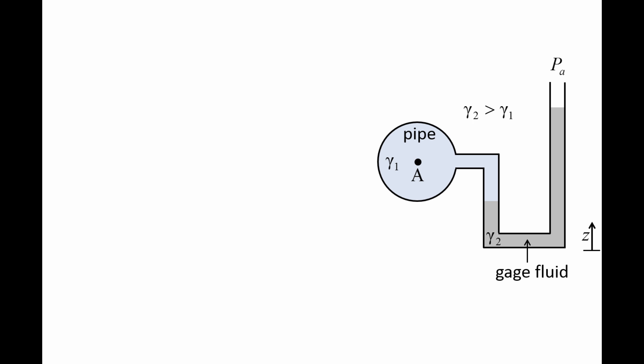Additionally, the U-shape of the tube means that the pressure in the pipe could be less than the ambient pressure. And the pressure in the pipe can be much larger than the ambient pressure if the gauge fluid is relatively dense, like mercury. To get a sense of how the U-tube manometer reacts to changes in pressure, imagine the pressure in the pipe increases or the ambient pressure decreases. In that case, the gauge fluid would shift to the right. The amount of shifting that occurs depends on the magnitude of the change of pressure and the specific weight of the gauge fluid.